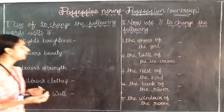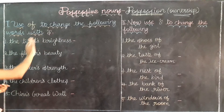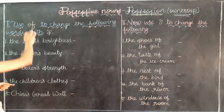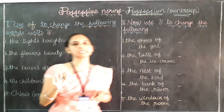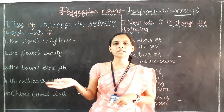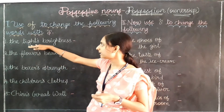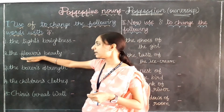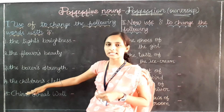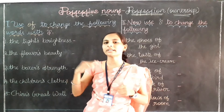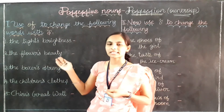The first part is to use 'of' to change the following words that are written with apostrophe-S. All the words are showing ownership with apostrophe-S, and now we need to change them into another form by using 'of' instead.